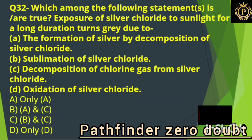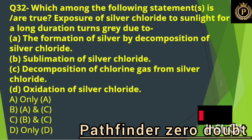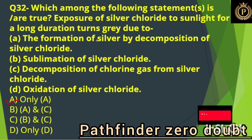Which among the following statements is true? Exposure of silver chloride to sunlight for a long duration turns gray due to: Option A, the formation of silver by decomposition of silver chloride.